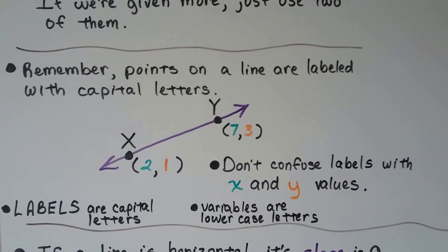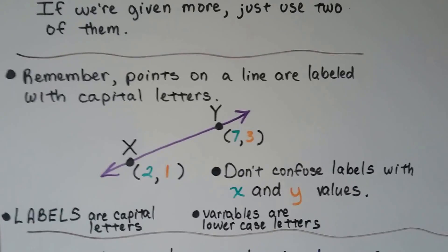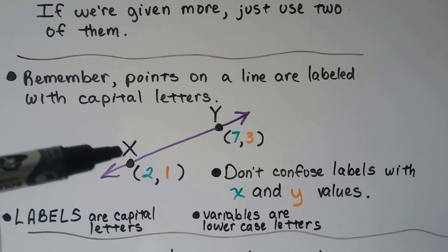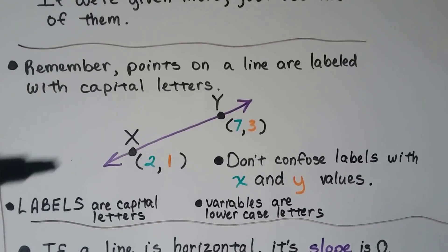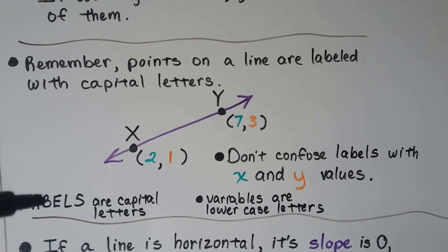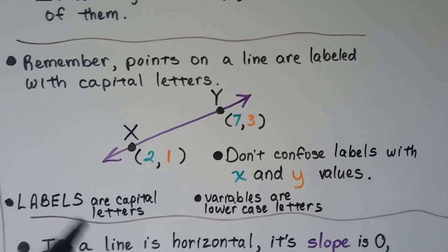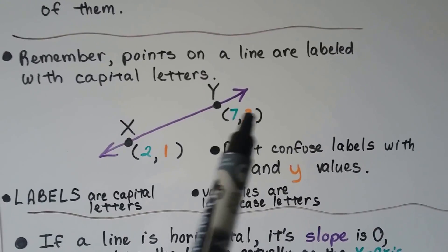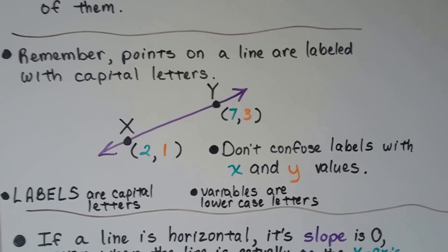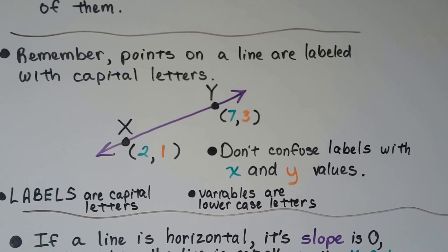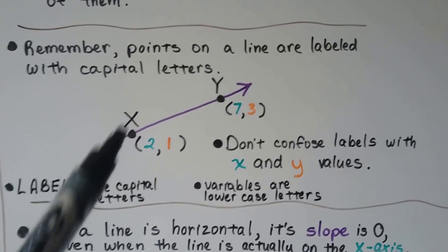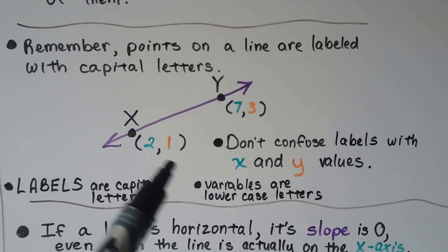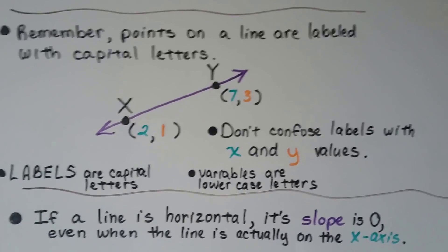Remember, points on a line are labeled with capital letters. It's not just points on a line. It's points on an angle, points on a polygon, vertices. They use capital letters for labels to identify them. Do not confuse this with x and y values. Those are lowercase letters. So that's how you know. Right away you can tell apart a variable from a labeled point is because those are capital letters and the variables are always lowercase letters.